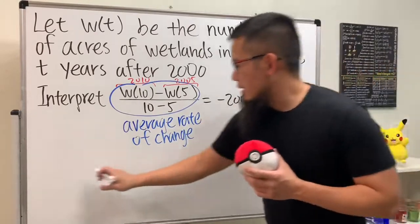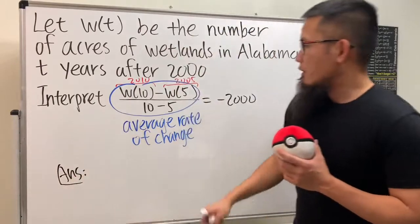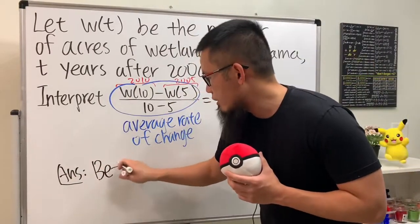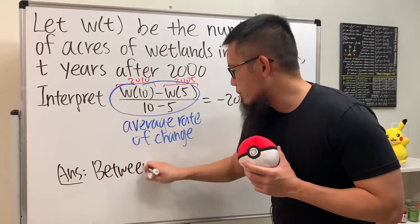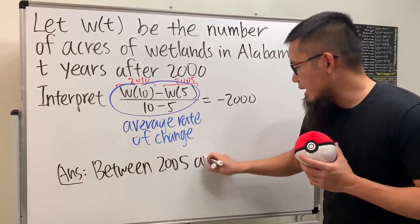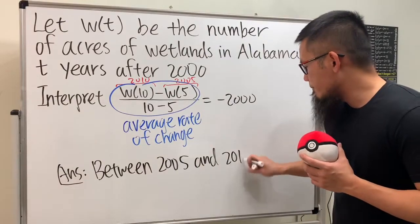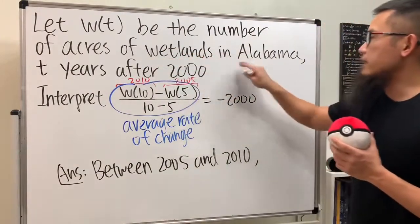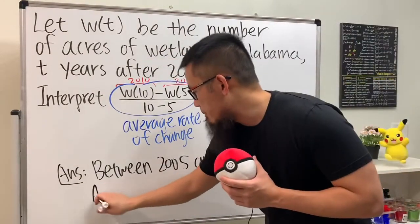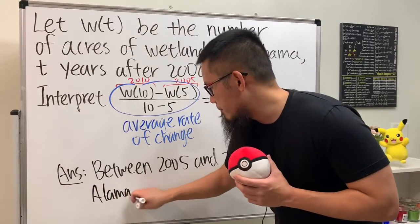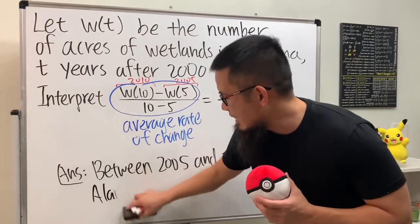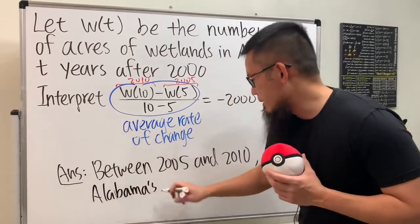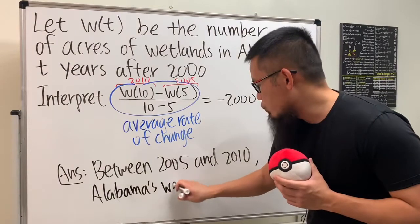Let's see how we can interpret this. First, mention the years: between the years of 2005 and 2010. Then, since w of t is the number of acres of wetlands in Alabama, we say Alabama's wetlands.